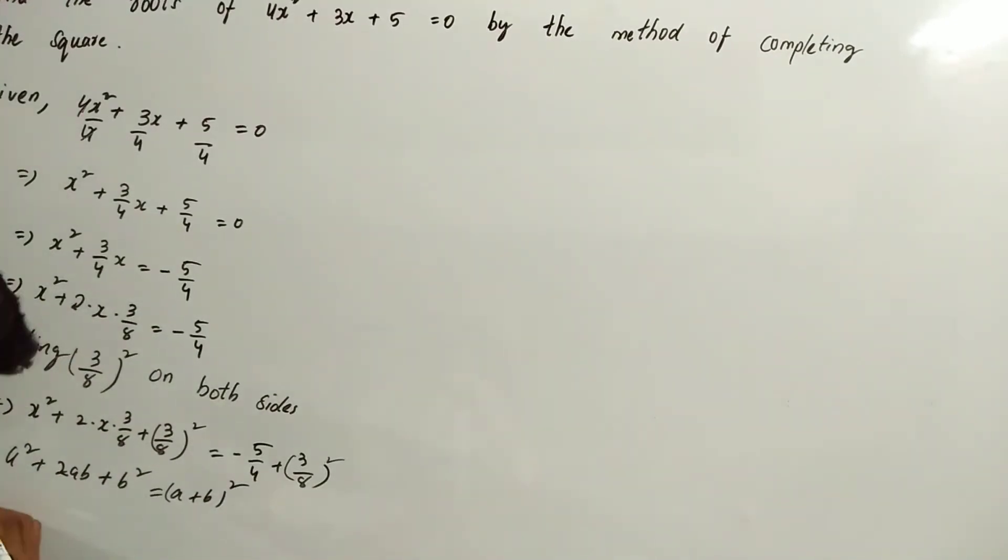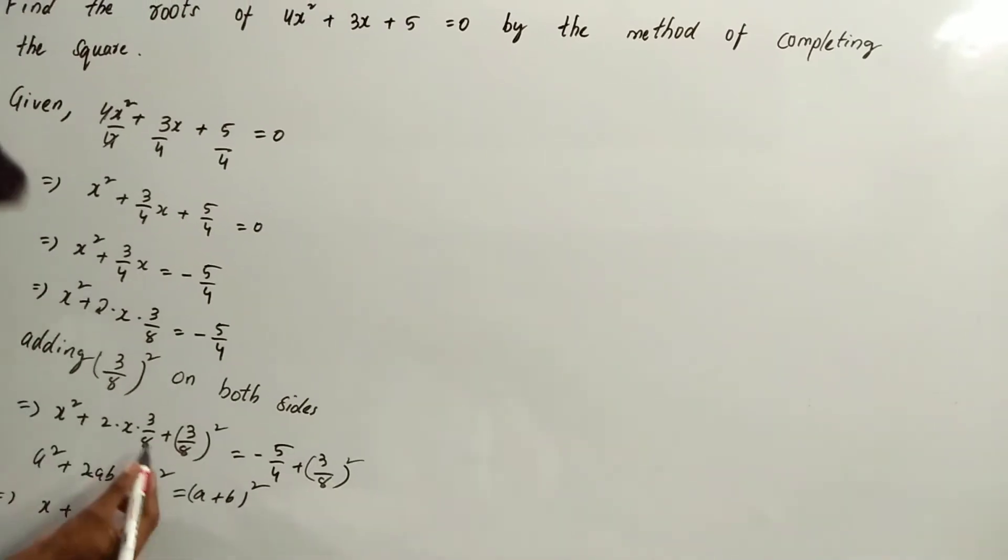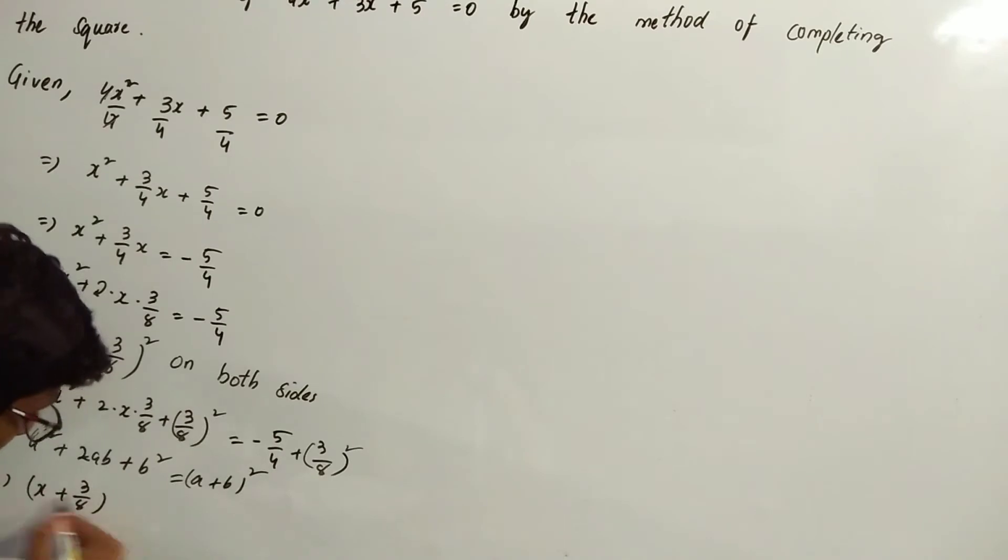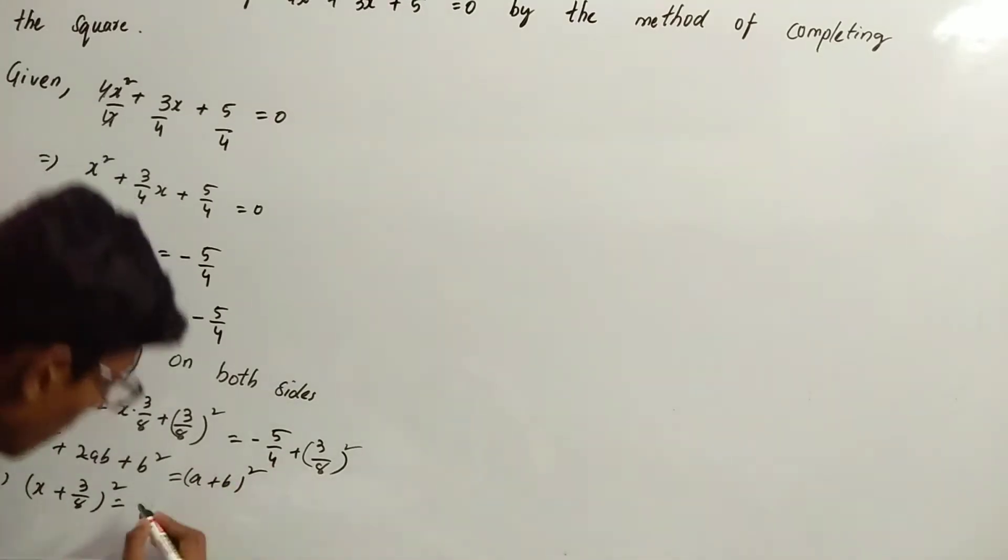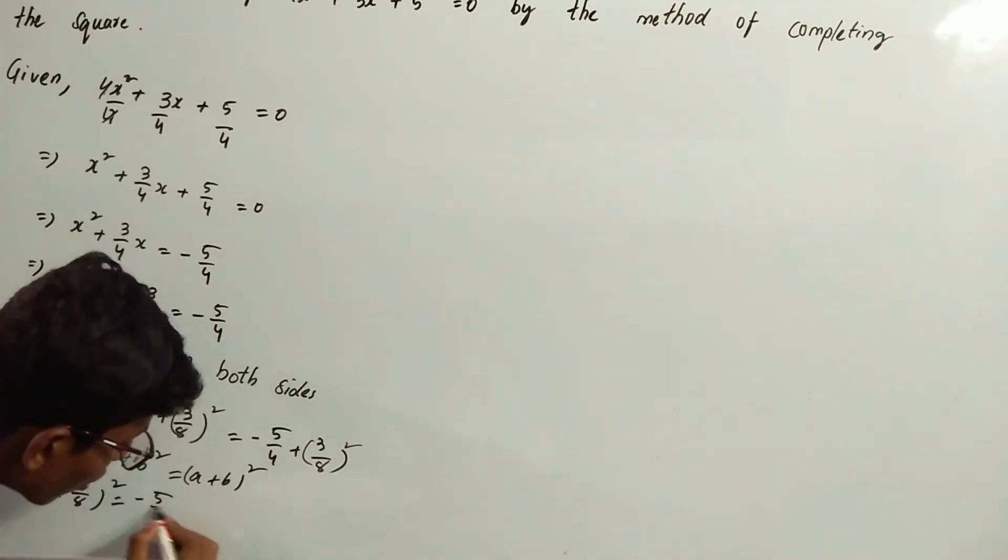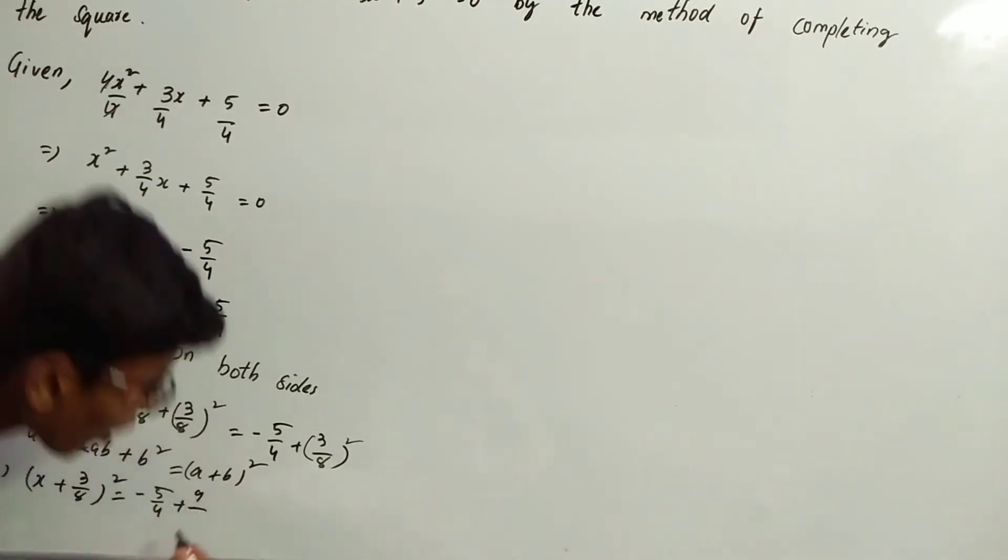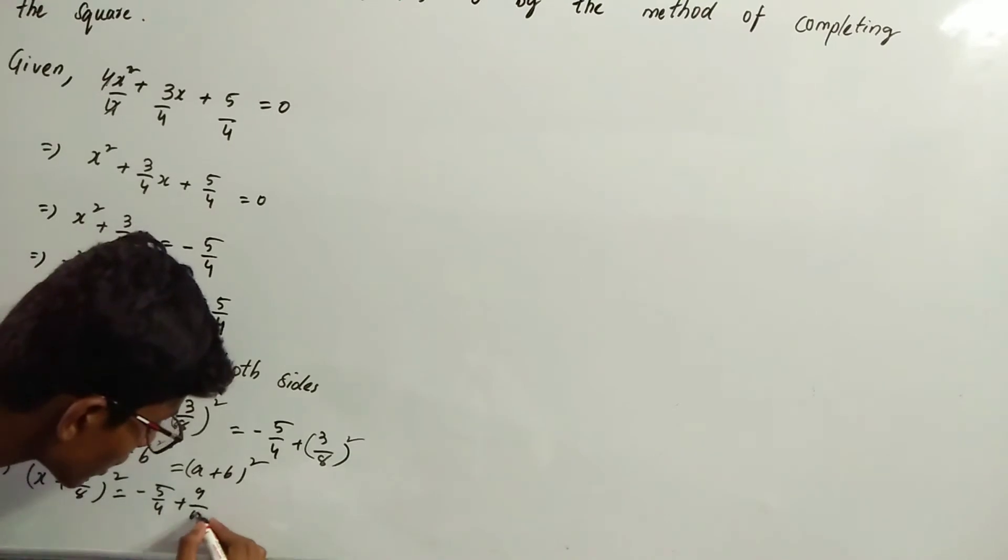A is x, so x + B is 3/8. Therefore, (x + 3/8)² = -5/4 + (3/8)². Now, 3² = 9 and 8² = 64.